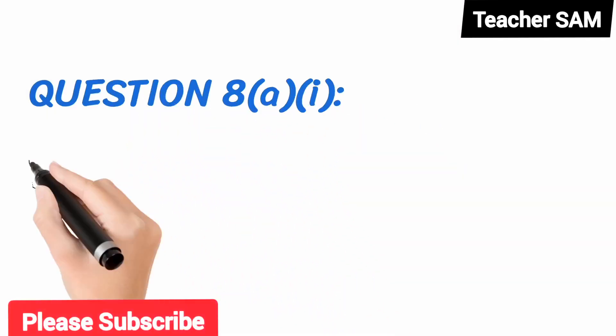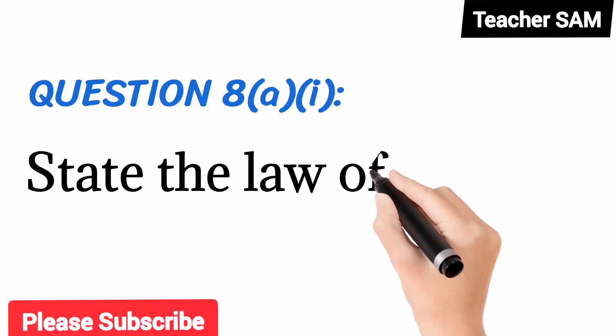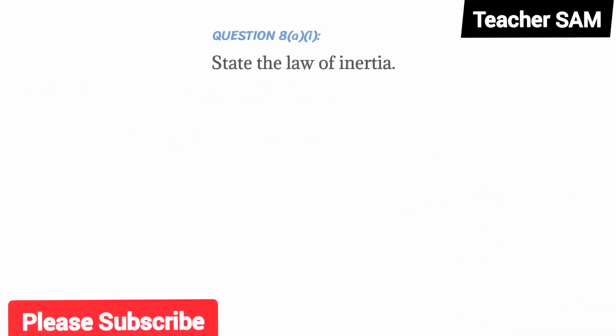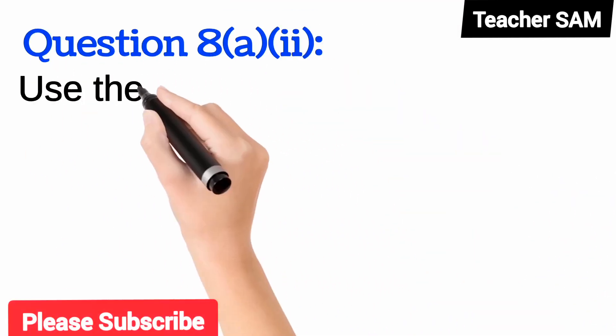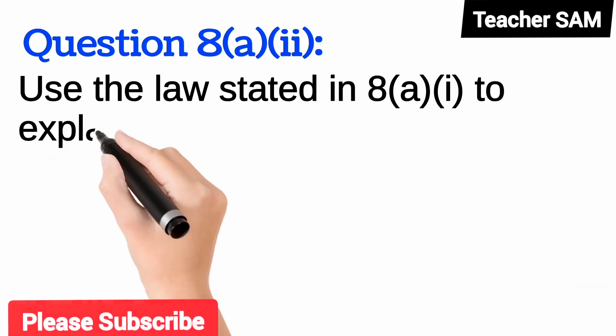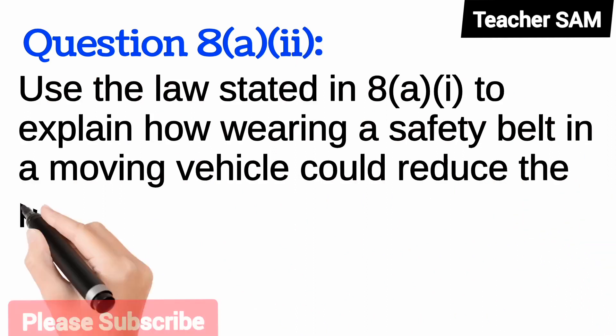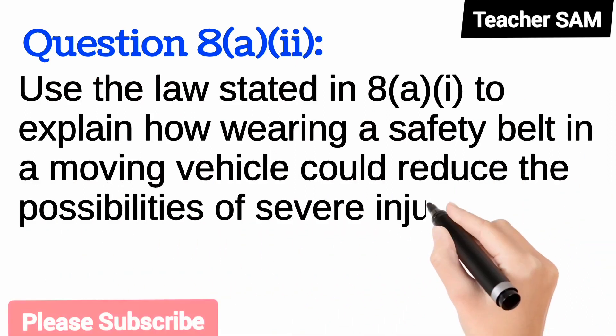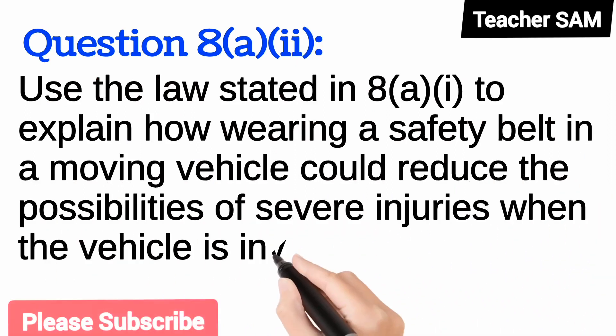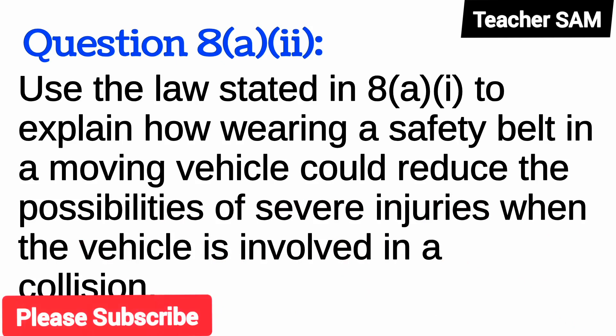Question 8(a)(i): State the law of inertia. 8(a)(ii): Use the law stated in 8(a)(i) to explain how wearing a safety belt in a moving vehicle could reduce the possibilities of severe injuries when the vehicle is involved in a collision.